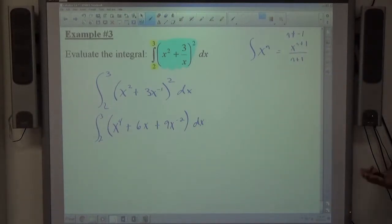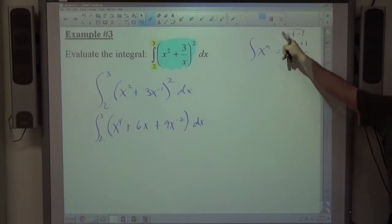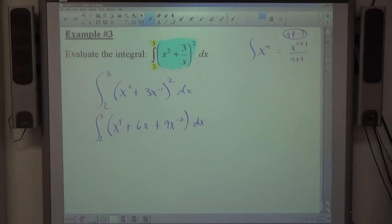And now I'm looking at a polynomial structure with x's to powers of 4, 1, and negative 2, none of which are negative 1. So now integration by normal means is legal, and we're going to do that.